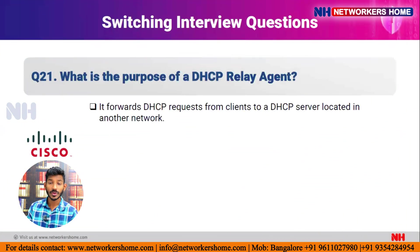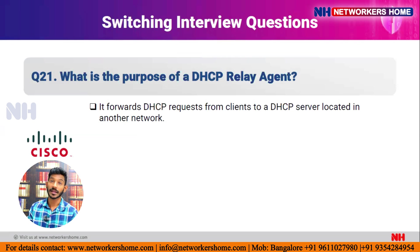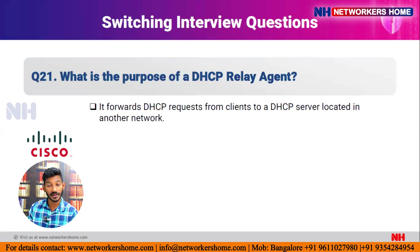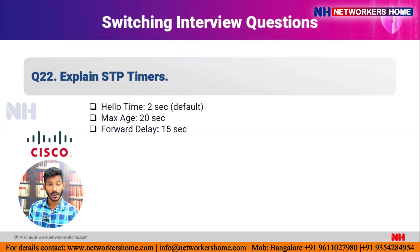Question twenty: what is the purpose of a DHCP relay agent? It forwards DHCP requests from clients to a DHCP server located in another network. Since a PC broadcasts to find the DHCP server, and routers don't forward broadcasts (per-port broadcast domain), when the DHCP server is on a different network the DHCP relay agent resolves this by forwarding the request to the remote DHCP server.